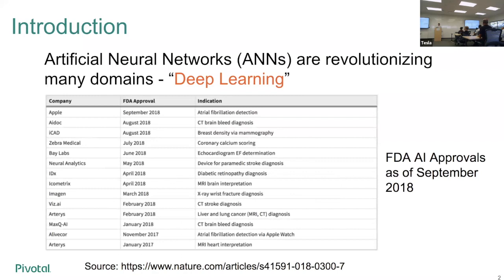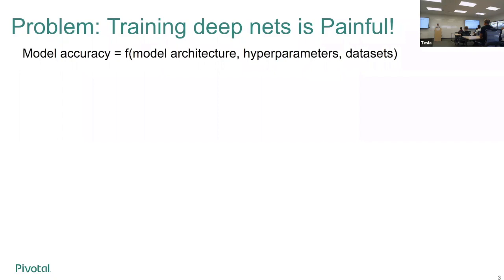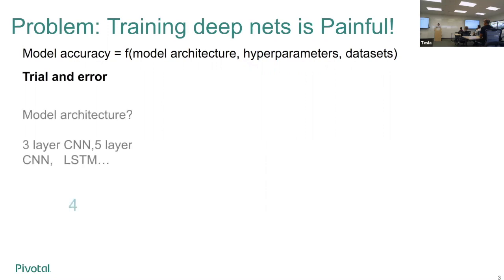We know that deep learning is great, but there's a problem: training deep learning neural networks is painful. The reason is that model accuracy — your goal for this deep net — depends on a bunch of things that are not so obviously connected, such as the model architecture, model configurations known as hyperparameters, and also your datasets. There is no universal truth for choosing these, so everything has to be done on a trial-and-error basis.